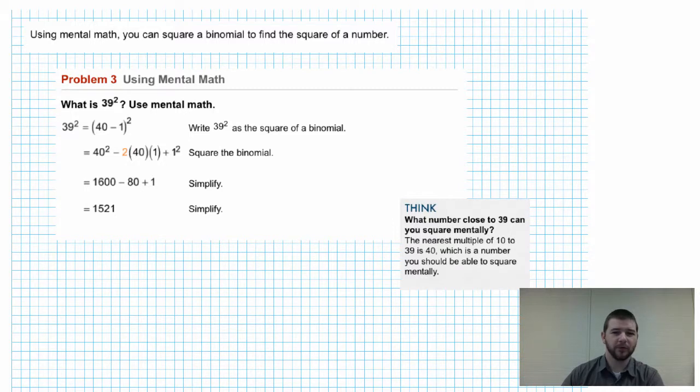And on to example problem number three using mental math. So we're now going to apply some of these properties we've learned about multiplying binomials, specifically squaring binomials, in order to learn a method for mental math that might make a lot of problems easier for you, particularly large squaring problems. At the top it says using mental math you can square a binomial to find the square of a number. The question says what is 39 squared? Use mental math.